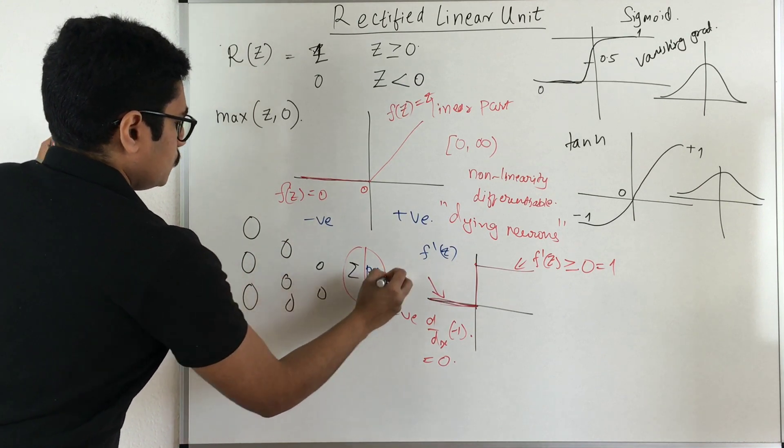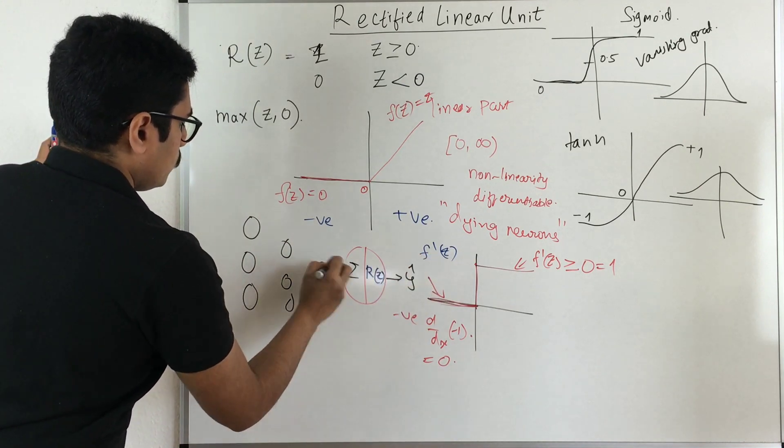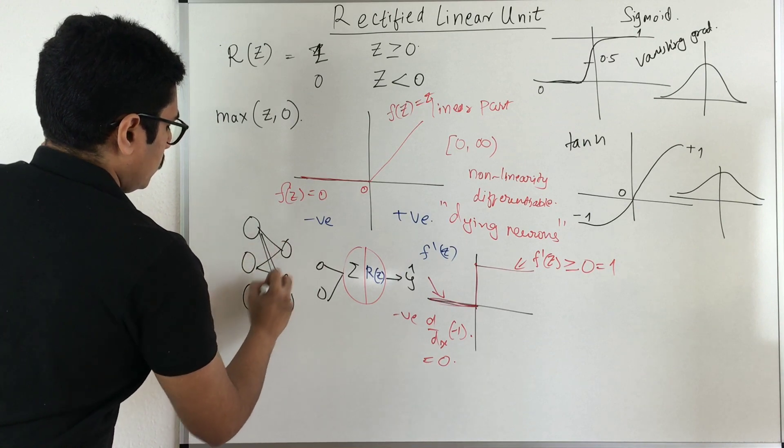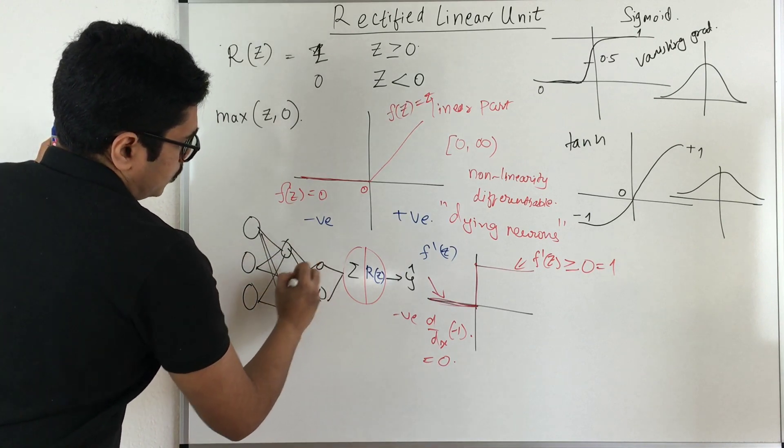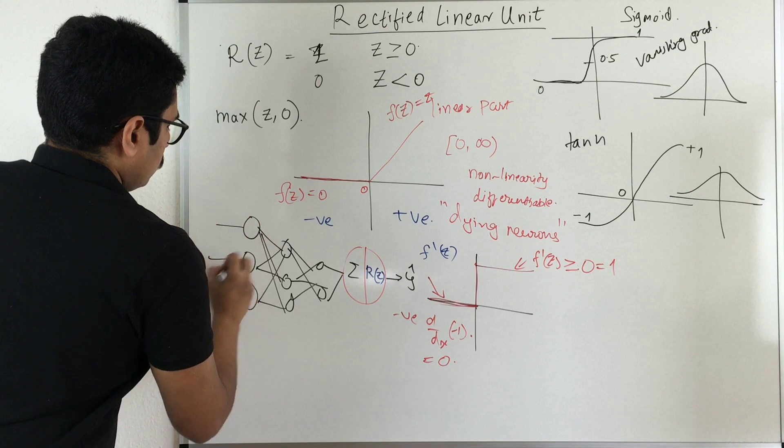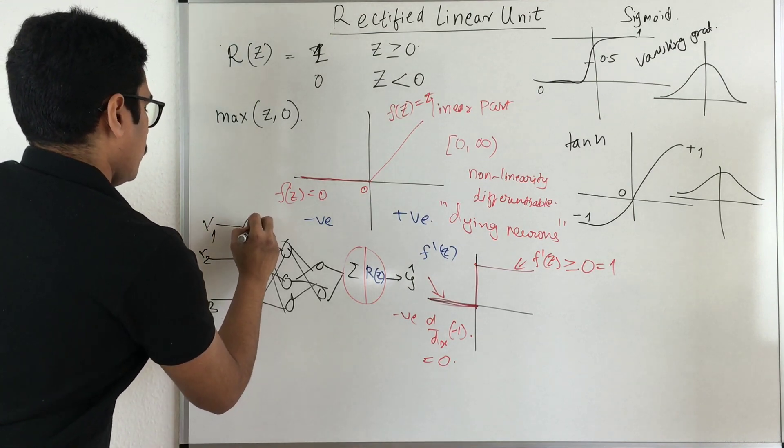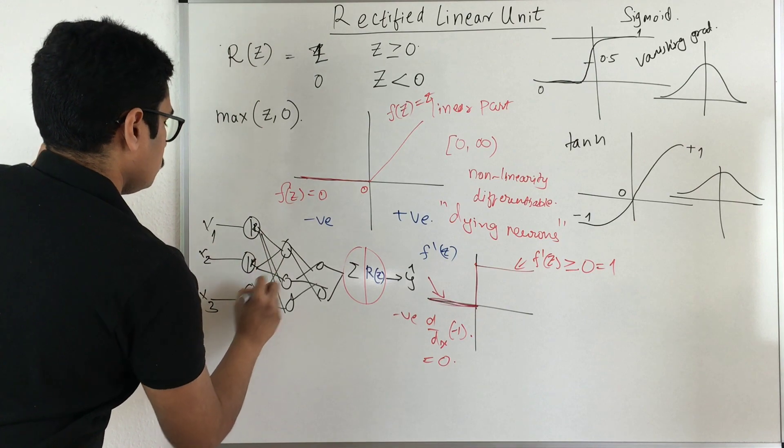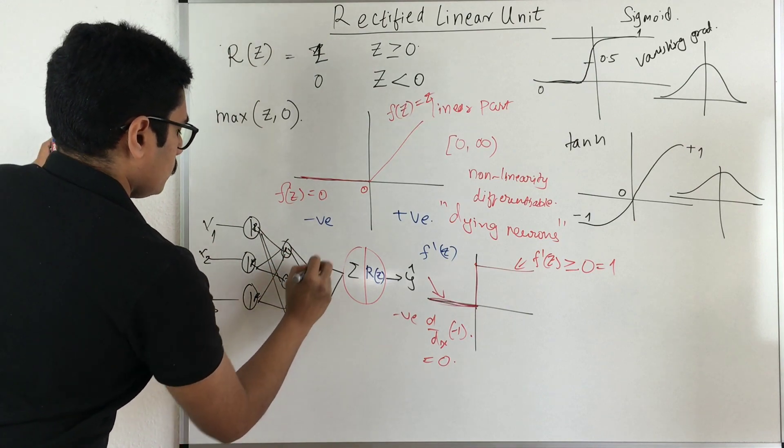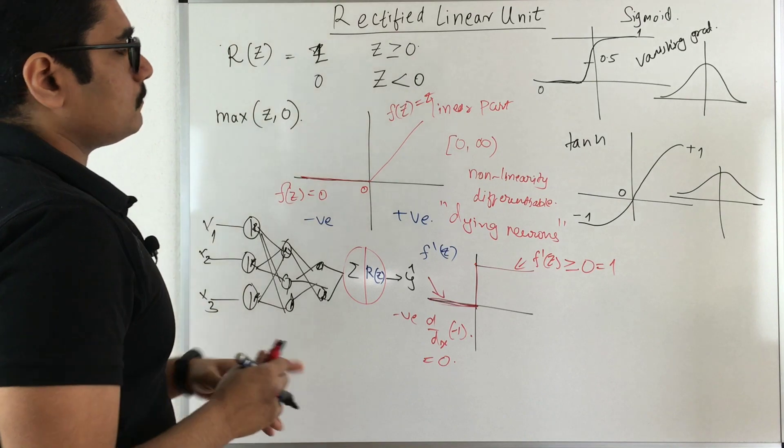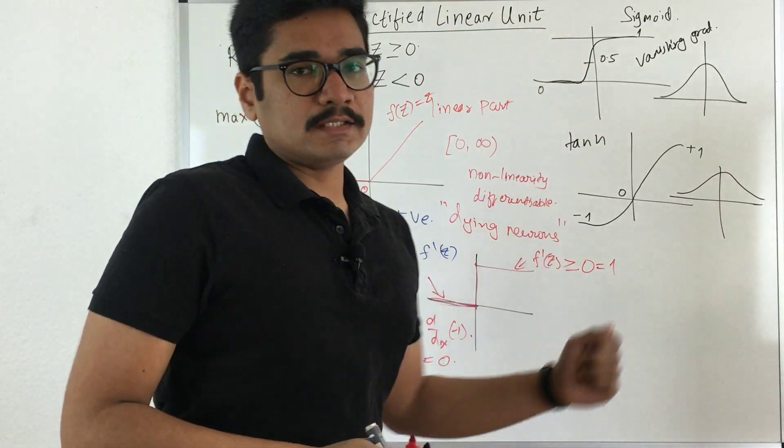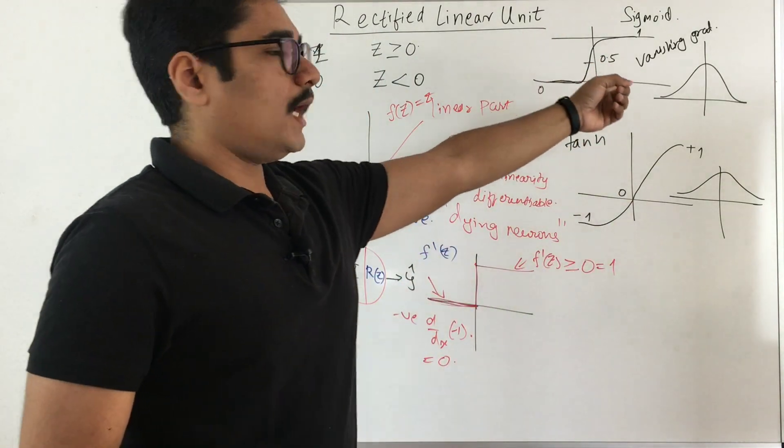And say this is your final output and you are connected by different pooling layers. Now you are giving some input to this and say each of the portion has some ReLU unit.